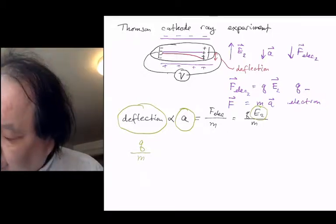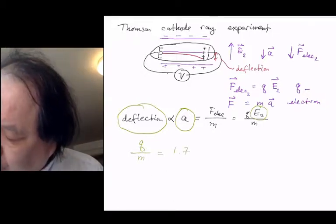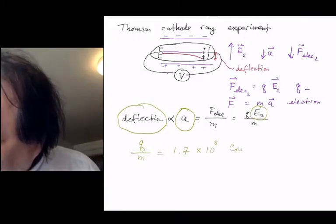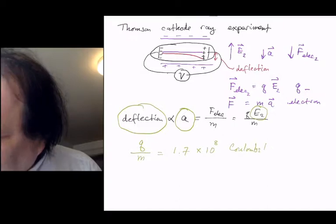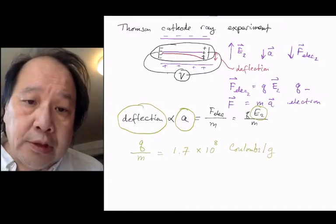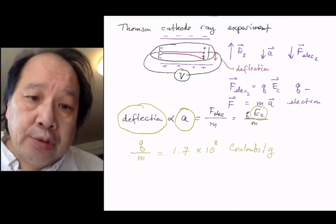And the value for q over m he discovered was 1.7 times 10 to the 8 coulombs per gram, which is absolutely a huge number.